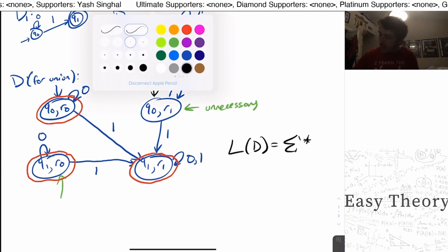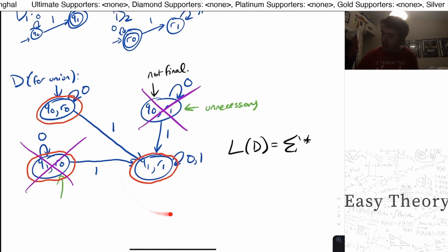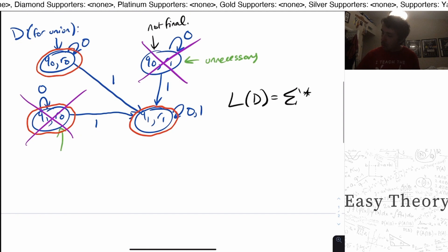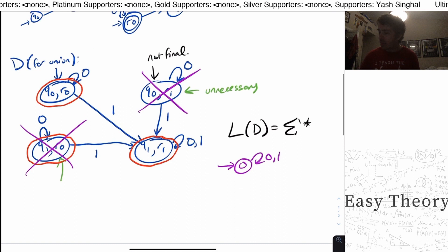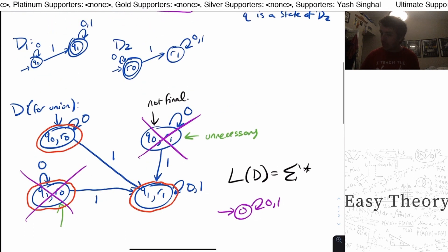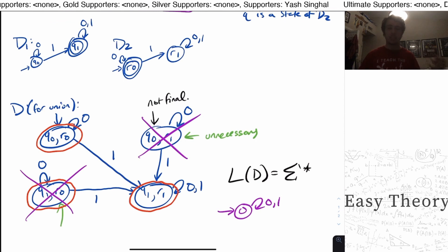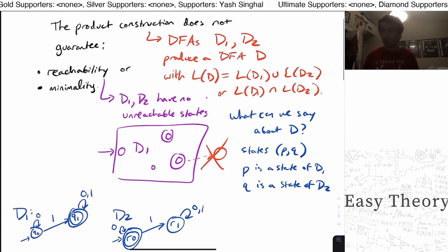And even if after we remove the unreachable states, so let's say we remove these two states, now we're left with a two state machine where every state is reachable from the start state. But it is not minimal still. And why is it not? Well, we can make a DFA for sigma star by just using a one state with looping on everything.